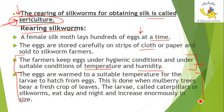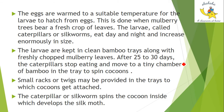After hatching, the larva — which is the caterpillar — needs to eat. It is fed fresh mulberry leaves. The larva is placed in a tray and fed fresh crops of mulberry leaves. As the larva starts eating, its size increases regularly.